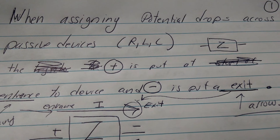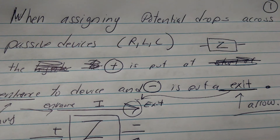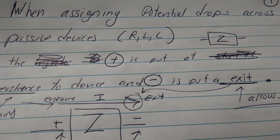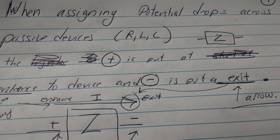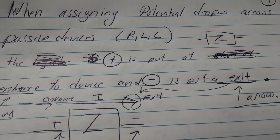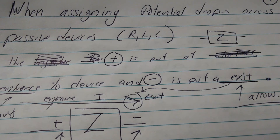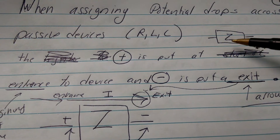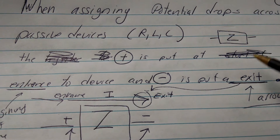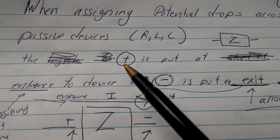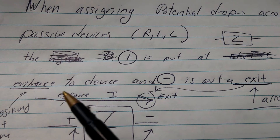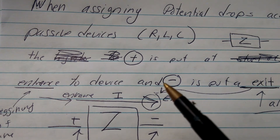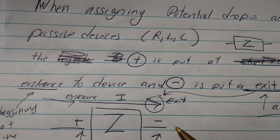This might not be the prettiest video in the world, but hopefully it can explain assigning potential drops and current directions very succinctly. When you're assigning a potential drop across a passive device — an R, L, or C, which we can represent in the generic case as an impedance Z — the positive part, or the higher potential, is put at the entrance to the device, and the negative, or the lower potential, is put at the exit.